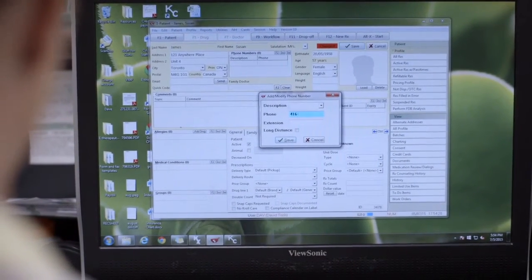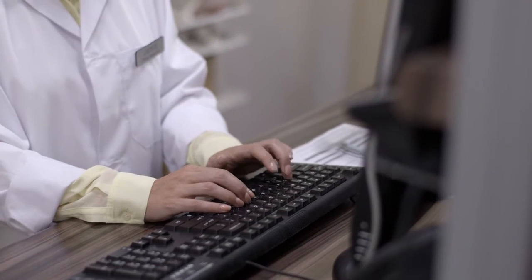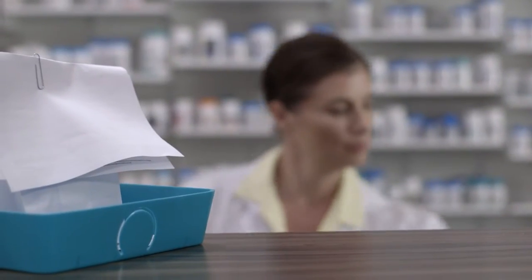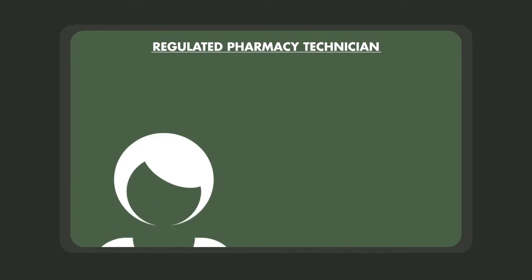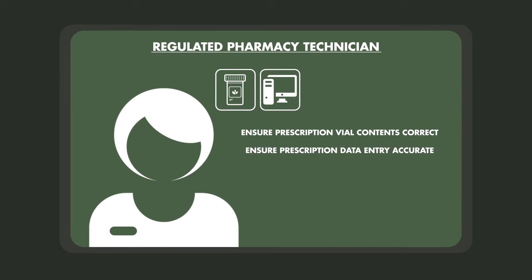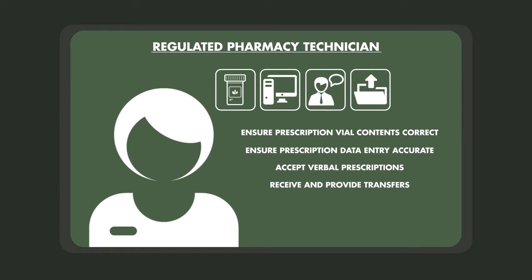More specifically, a regulated pharmacy technician can ensure that a prescription vial contains the right drug and quantity, ensure that prescription data entry is done accurately and matches the original prescription issued by the prescriber, accept verbal prescriptions (excluding narcotic, controlled, and targeted substances), receive and provide prescription transfers (again, excluding narcotic, controlled, and targeted substances), and perform a procedure on a tissue below the dermis, for example using a lancing device.